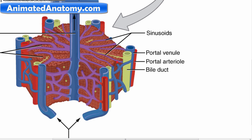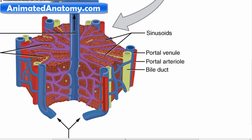The portal triad is misleadingly named — it's not actually a triad. It consists of five structures, three of which are illustrated here. You can see the artery — the branches coming from the hepatic artery — then the blue ones, which are the branches of the portal vein, and also you have the bile duct, which is the green structure. So in one triad you can find these three structures: branches of the hepatic artery, portal vein, and the bile duct.